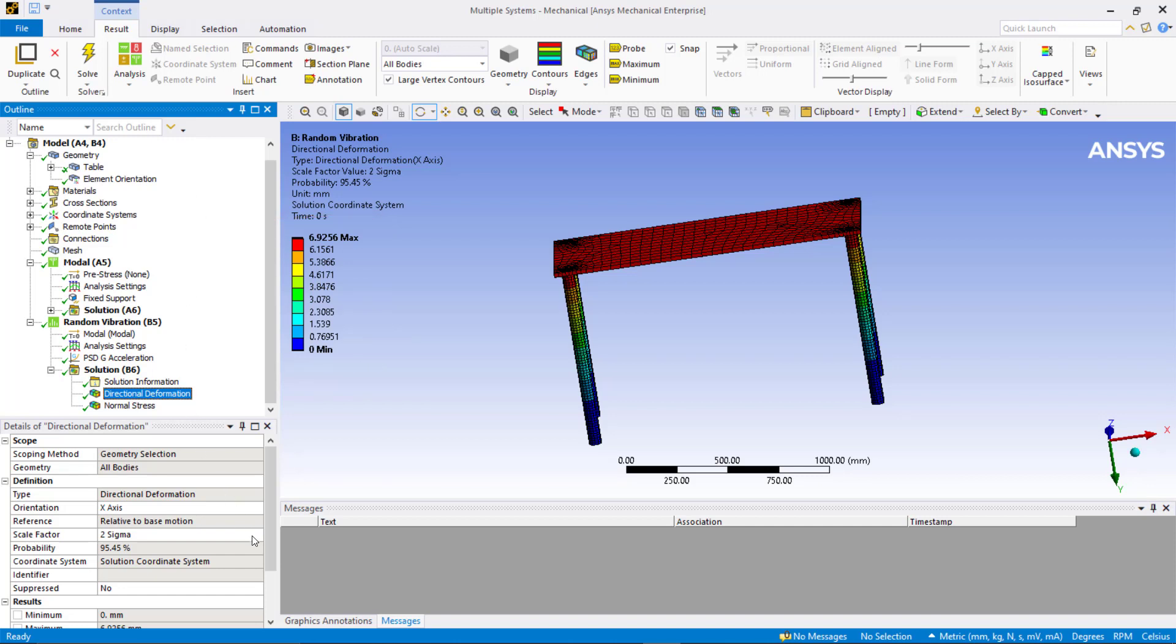Similarly, for 3 sigma scaling factor, there is 99.73% probability that the deformation in x-direction will be at or below 10.39 mm.